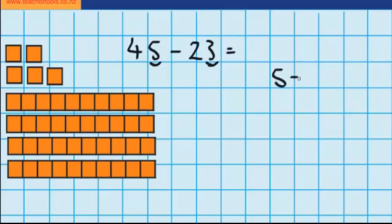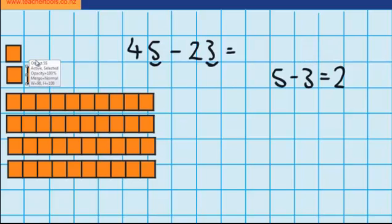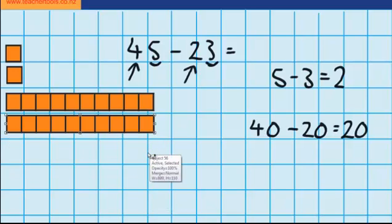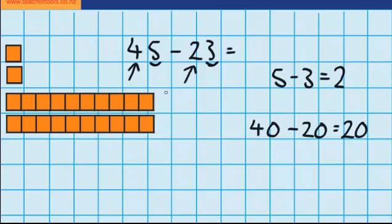So I'm thinking 5 minus 3. Well, I think it equals 2, but let's check it using the materials. So I'm coming over here to delete 3 ones — that was 1 gone, 2 gone, and 3 gone. So you can see we were right: 5 minus 3 equals 2. Now I'm moving over to my tens. You can see that I've got 4 tens, and the question says I need to take away 2 tens — so that's 40 minus 20. I think that is 20, but let's use the materials just to check. So I'm coming over here to delete 20: there's 10 gone, there's 20 gone. And you can see we're left with 20.